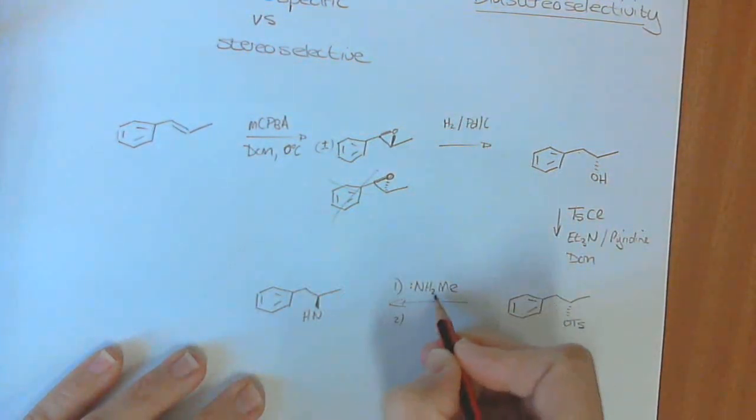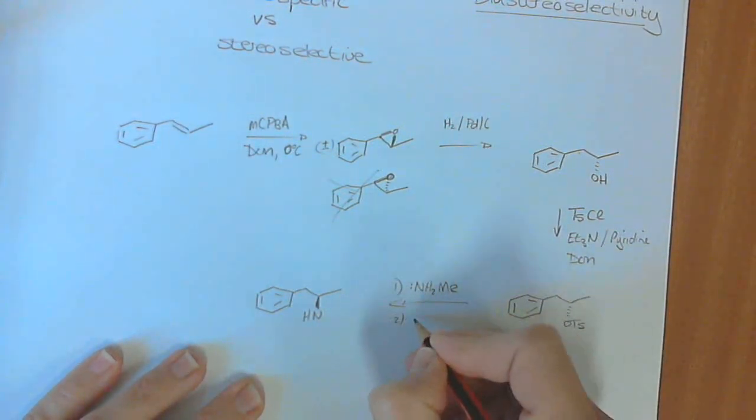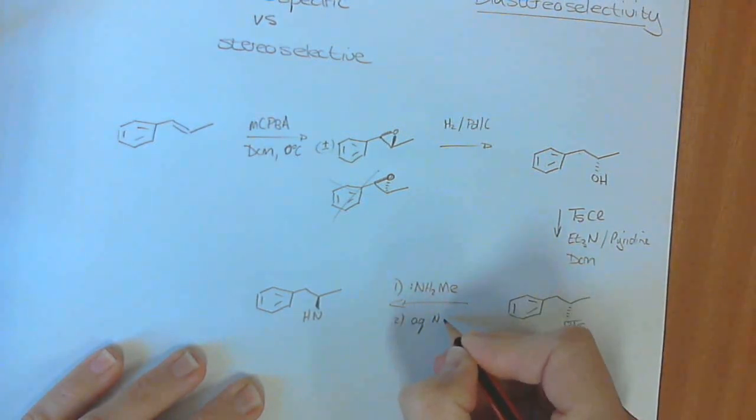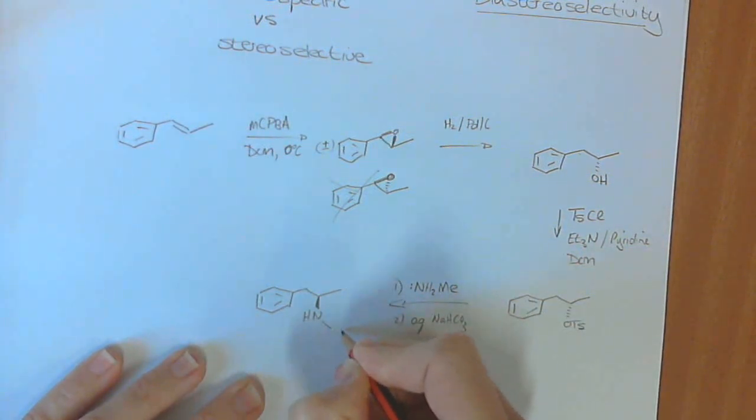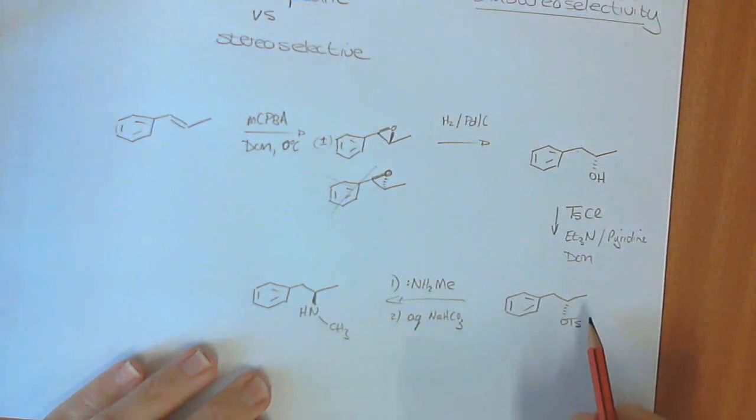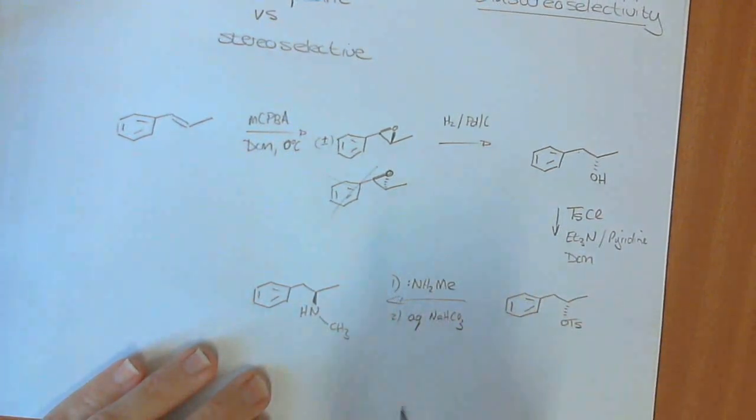And let's just do a workup at the end. So step one, step two, just to remove that extra proton that's on over there. We just wash it with aqueous sodium bicarb. And then we get the CH3 over there. So we've done a substitution reaction. It's an inversion of stereochemistry. It's SN2.